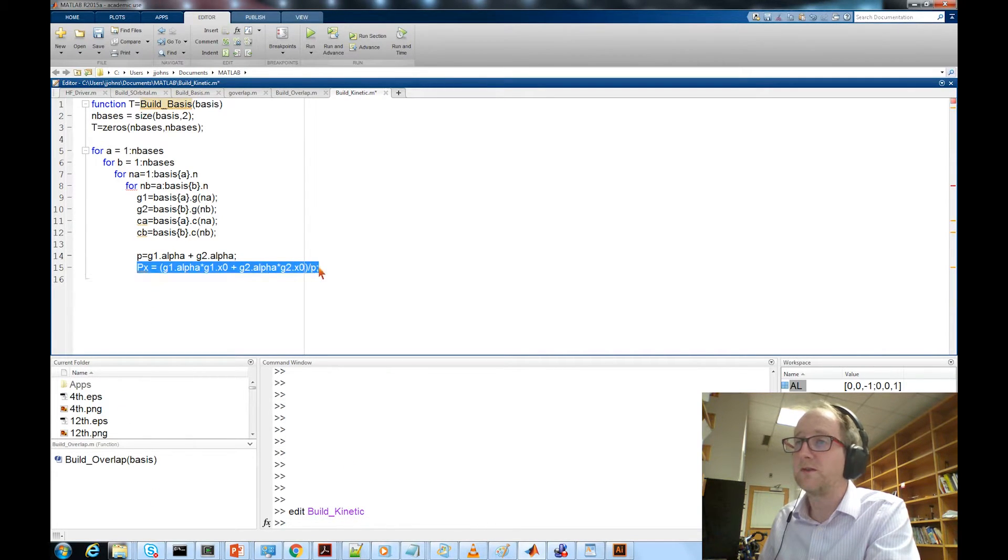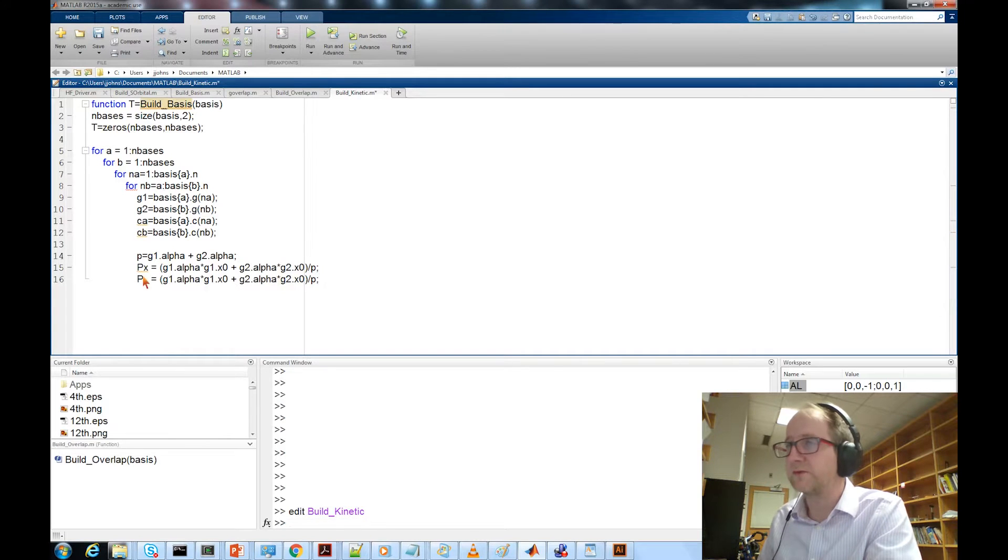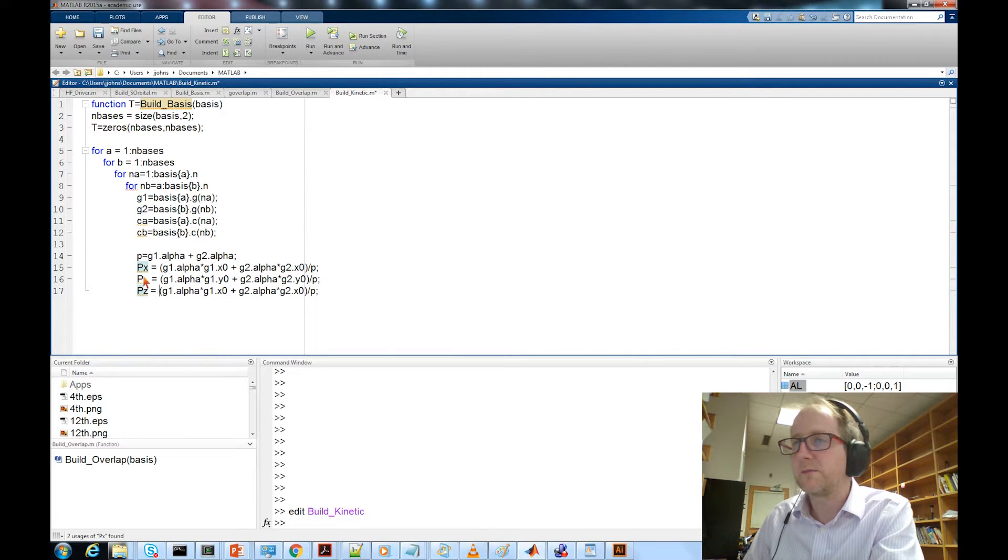Our x, y, and z components all look pretty much the same, so I'm going to do a little copy and paste. I'll switch x to y to do py, and do that again switching x to z, and we'll have the x, y, and z components of our new Gaussian.